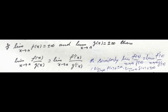If limit x tend to a f of x is equal to plus minus infinity and limit x tend to a g of x is equal to plus minus infinity, then limit x tend to a f of x over g of x is equal to limit x tend to a f dash of x over g dash of x by L'Hospital rule.